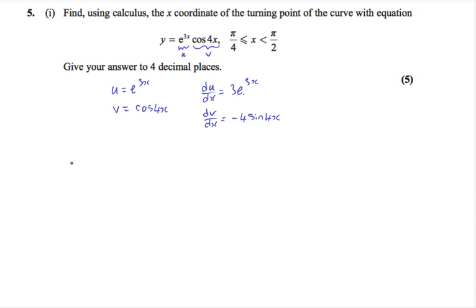The product rule states that for the product of u times v, dy dx will be equal to v du dx plus u dv dx. Substituting these terms we've just worked out into the product rule gives us v is cos 4x, du dx is 3 e to the 3x, u is e to the 3x, and dv dx is minus 4 sine 4x.